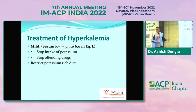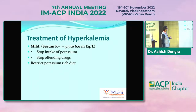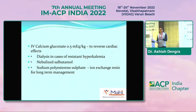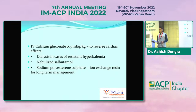For mild hyperkalemia (5.5 to 6), stop potassium intake, stop offending drugs, and restrict diet. For moderate to severe (6 to 8), give glucose-insulin infusion, sodium bicarbonate, calcium gluconate, and nebulization with salbutamol. In resistant cases, dialysis is the last option.